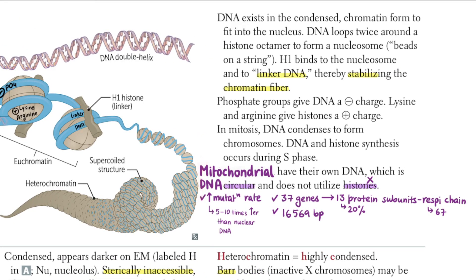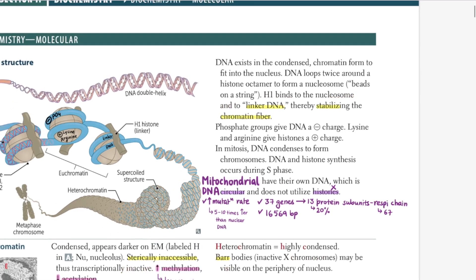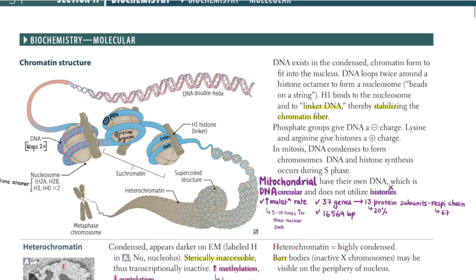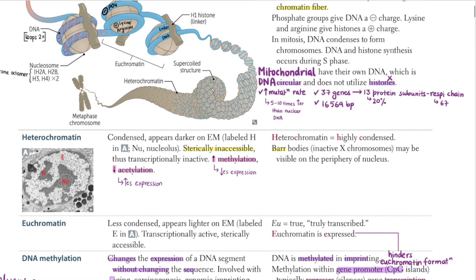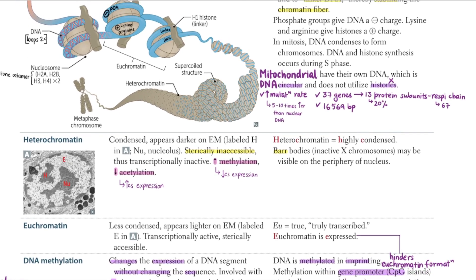Mitochondrial DNA is really important for exams. It is circular, it does not utilize histones — those are the two most important things. The mutation rate is higher. There are about 37 genes that code for proteins mainly in the respiratory chain, and it has 16,569 base pairs. These numbers have also come up in the exam.